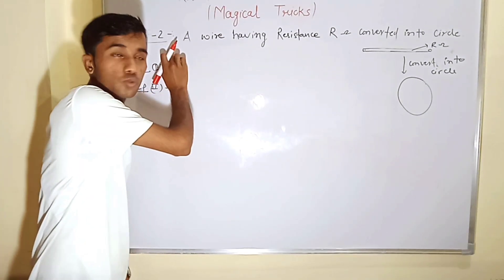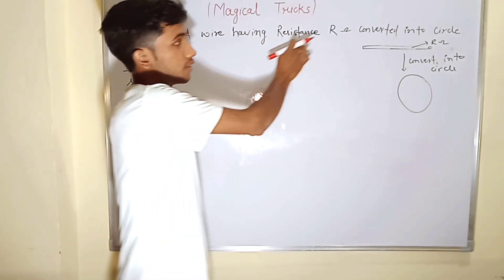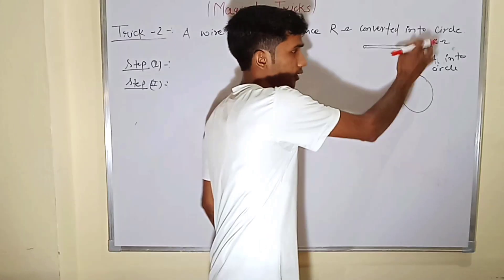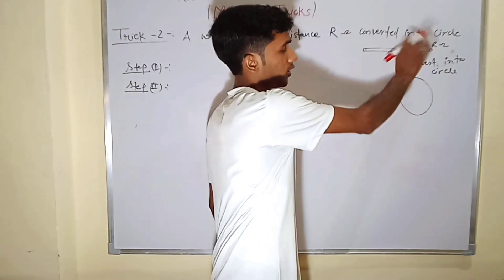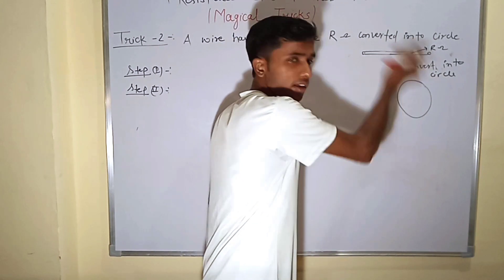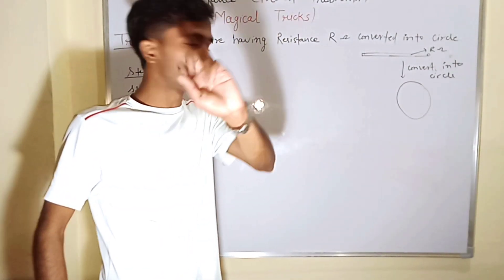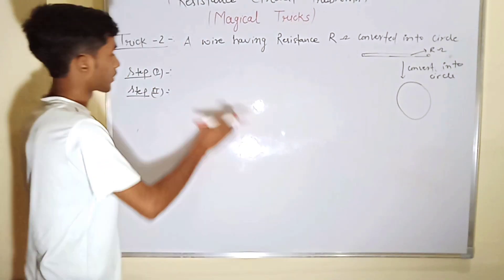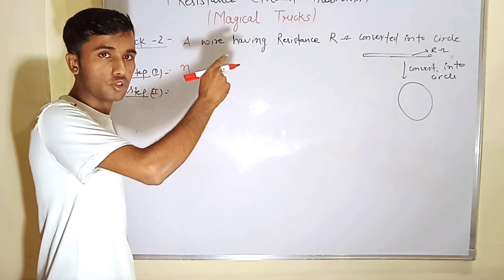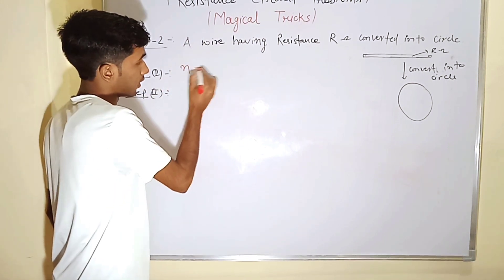This is our trick number 2. A wire having resistance R₀ is converted into a circuit. This resistance R₀ is converted into one circle. So here we have two steps to solve. First step is: find n.